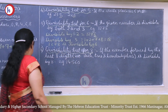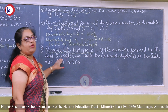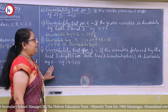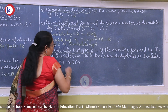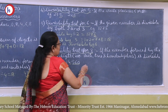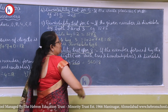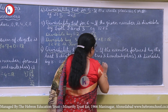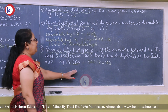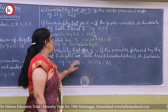Next, the divisibility test for 8: similar to the test for 4, but here we look at the last 3 digits — the units, tens, and hundreds place. For example, 14,560: the last 3 digits are 560. Dividing 560 by 8 gives 70 with no remainder, so 14,560 is divisible by 8.